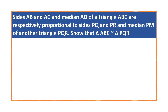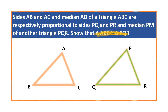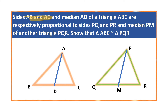Sides AB and AC and median AD of a triangle ABC are respectively proportional to sides PQ and PR and median PM of another triangle PQR. We are given two triangles, triangle ABC with median AD and triangle PQR with median PM, and that AB by PQ is equal to AC by PR is equal to AD by PM.